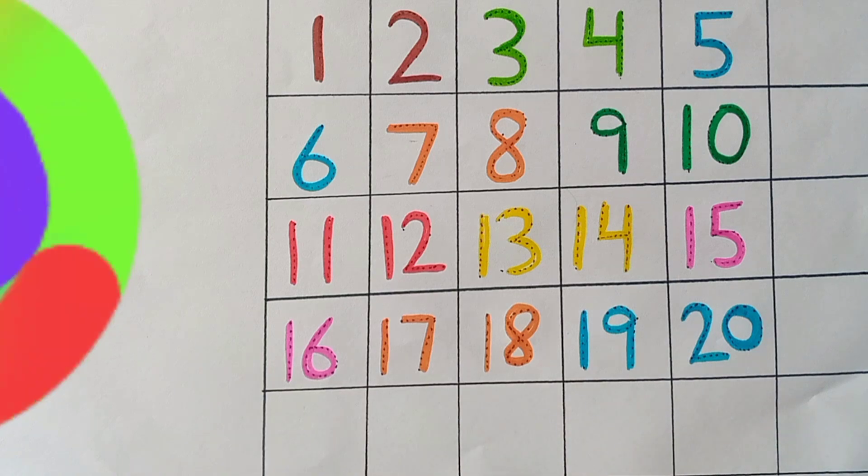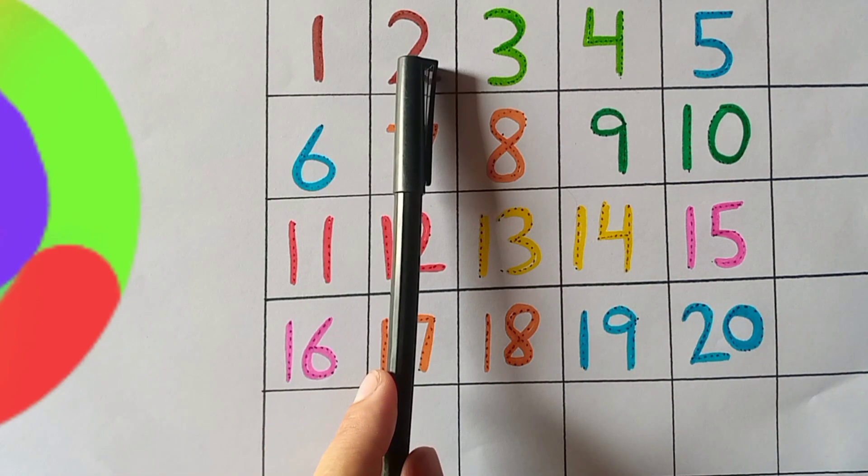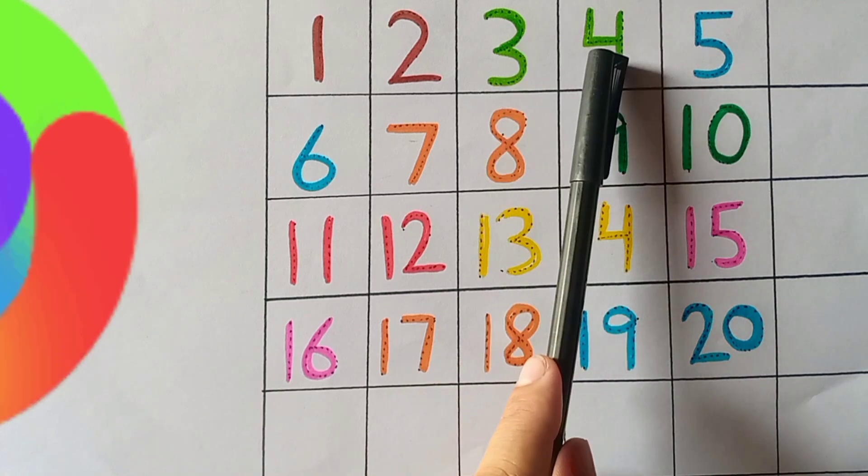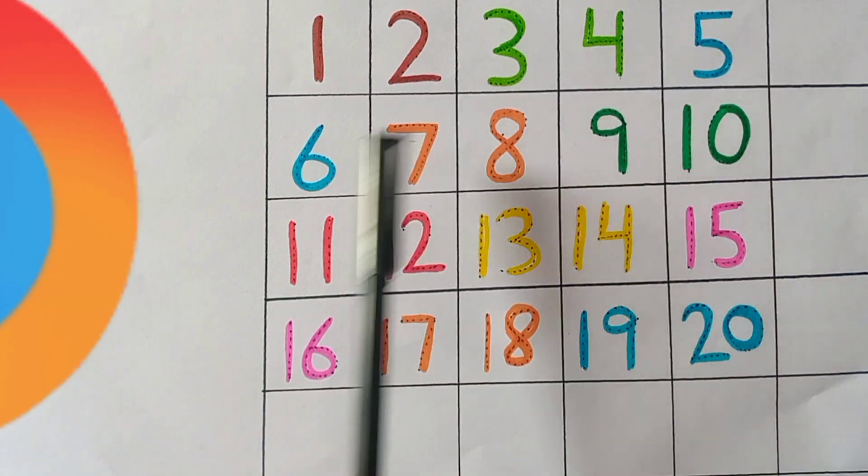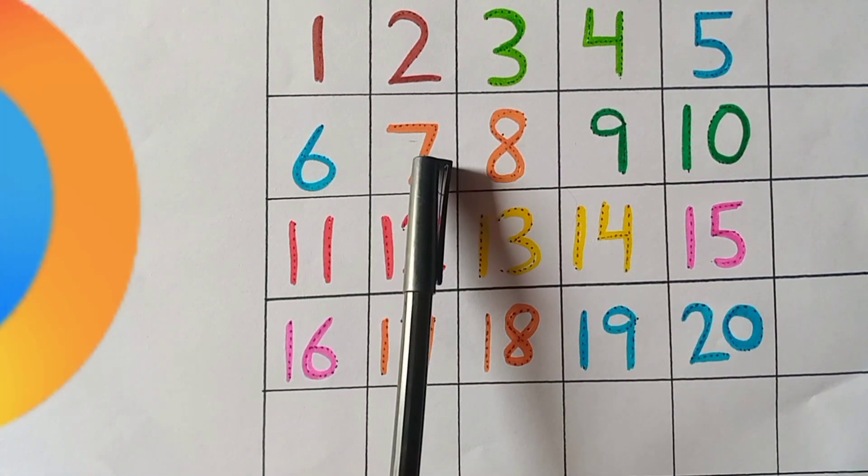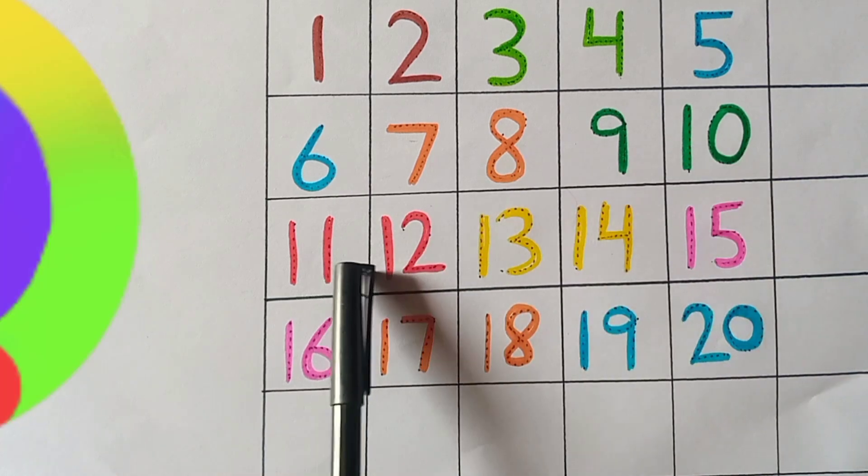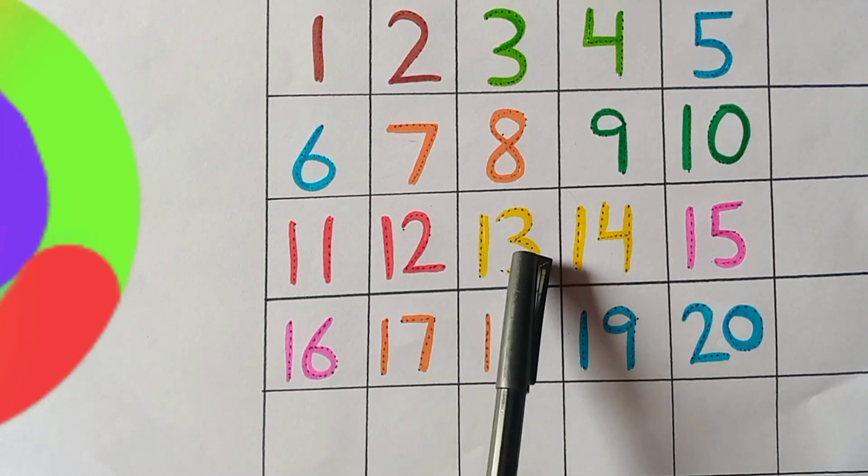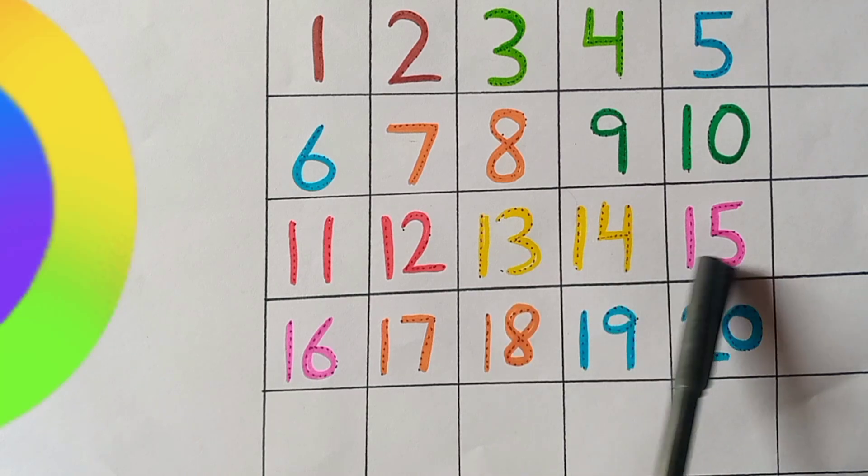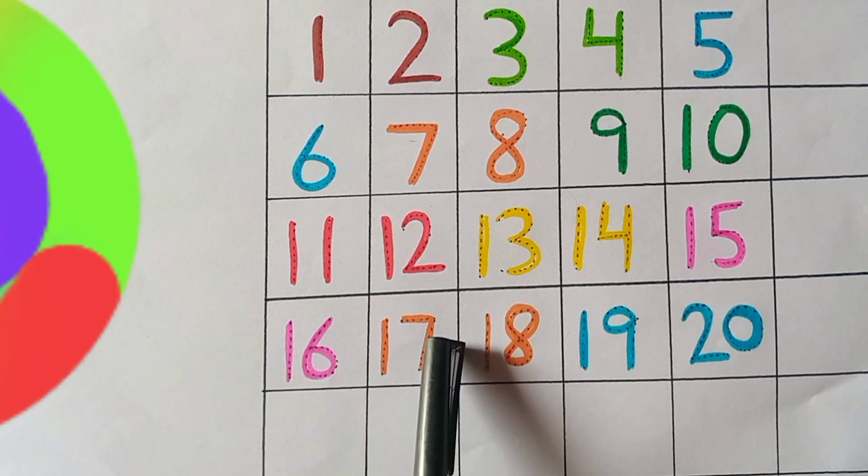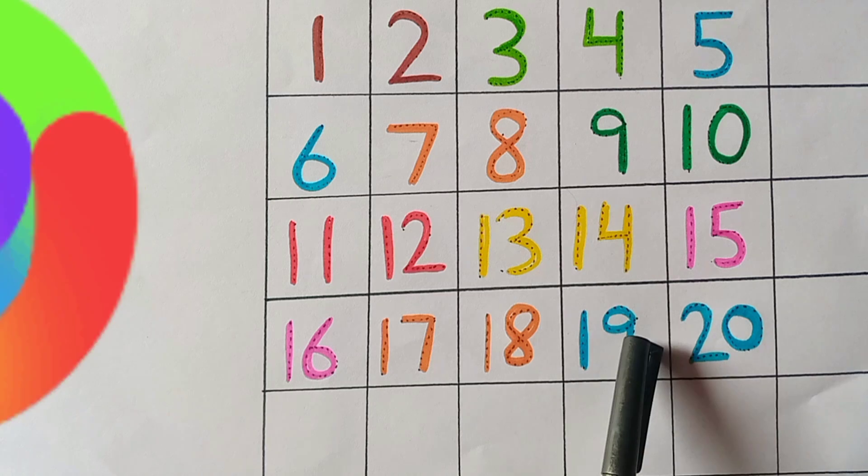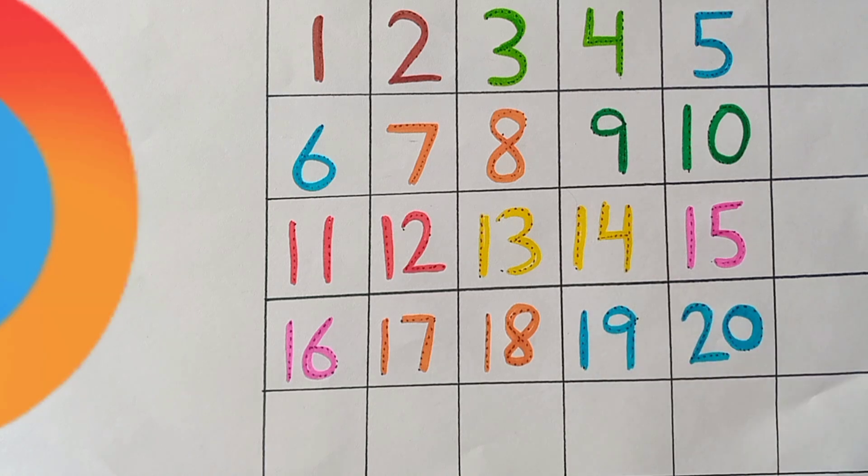Now kids, let's start repeat our lesson. One, two, three, four, five, six, seven, eight, nine, ten, eleven, twelve, thirteen, fourteen, fifteen, sixteen, seventeen, eighteen, nineteen, twenty.